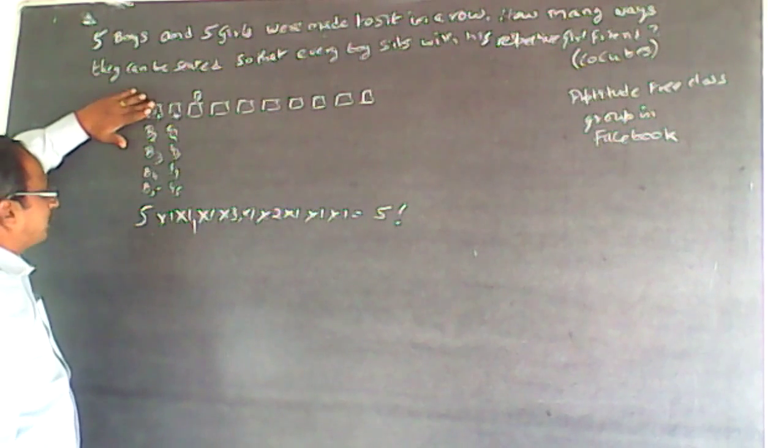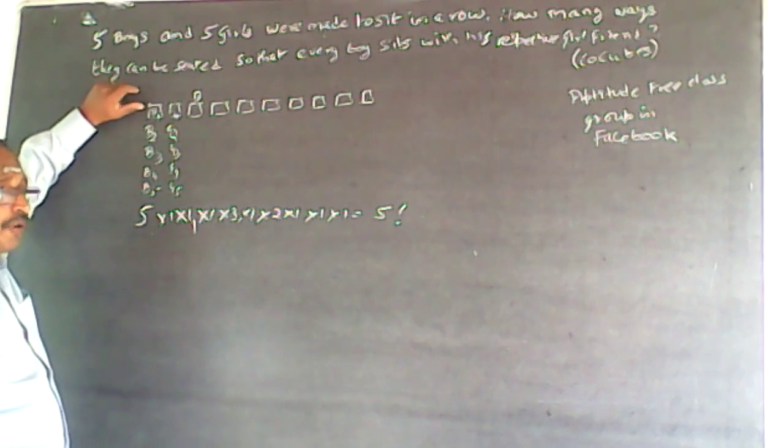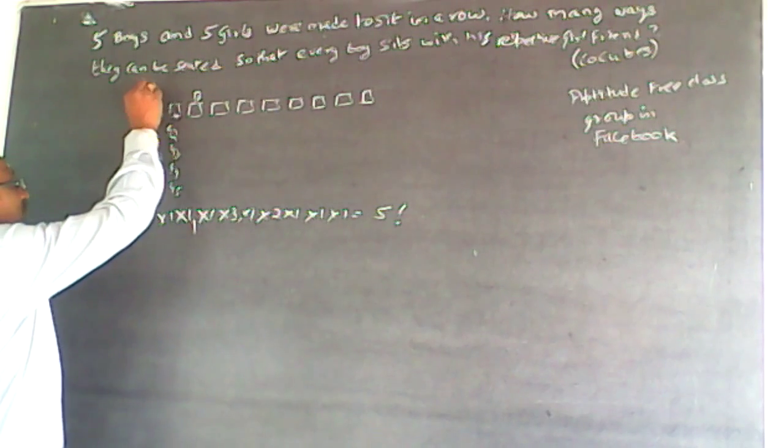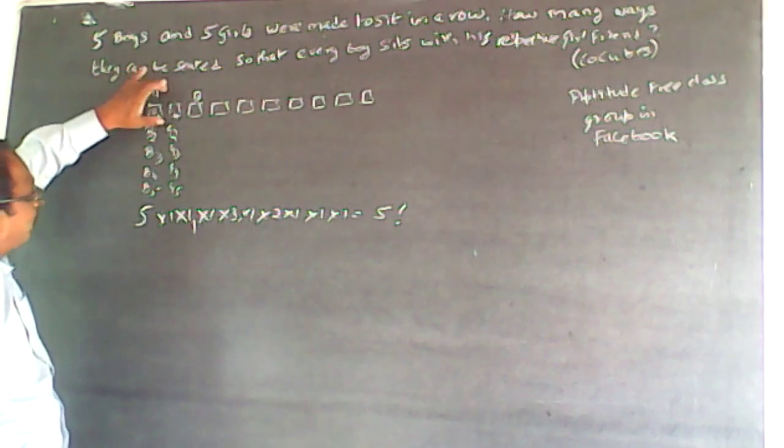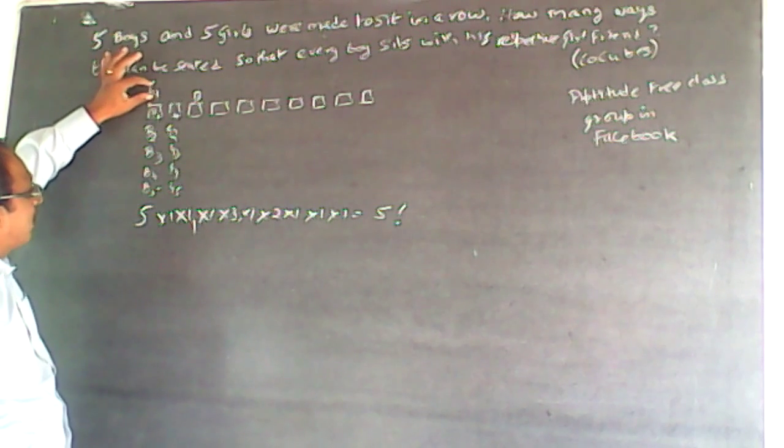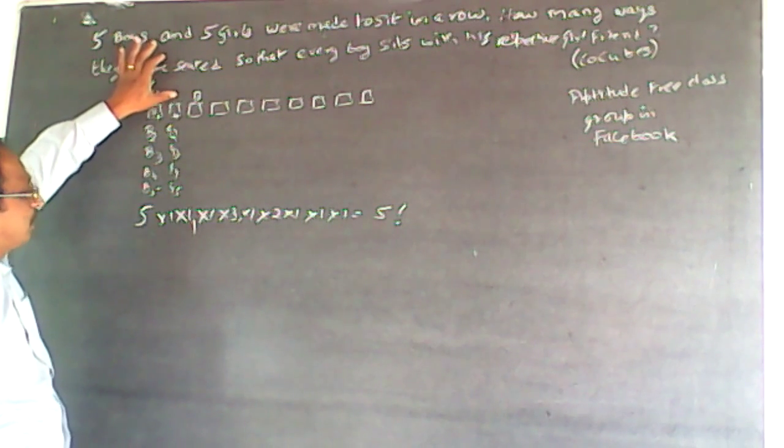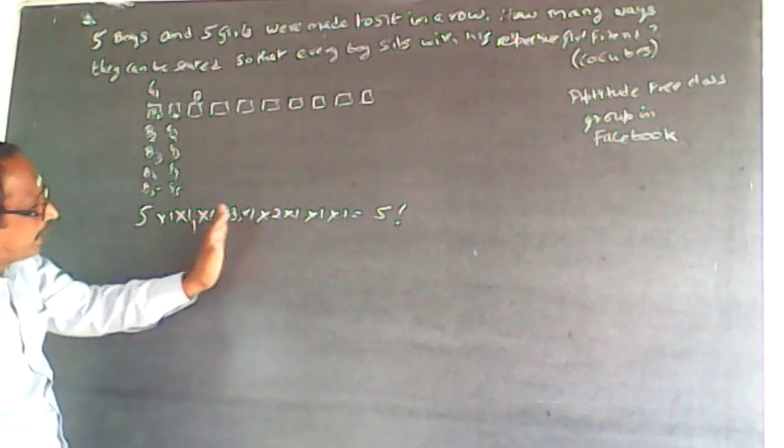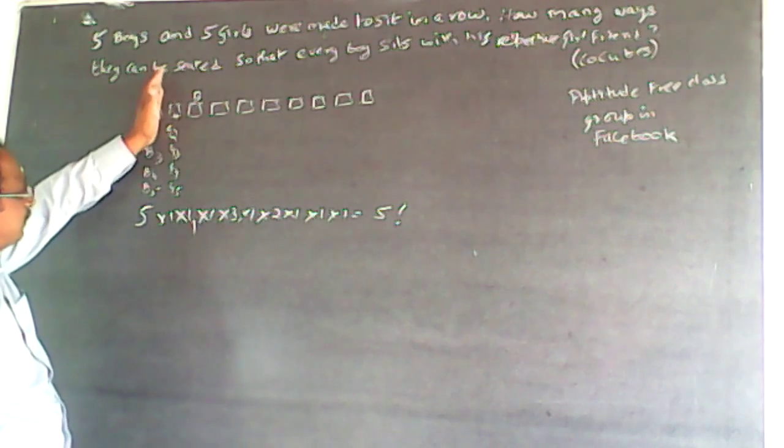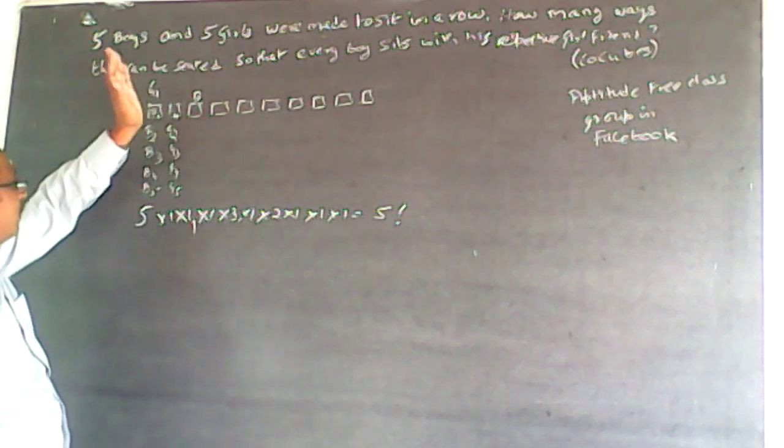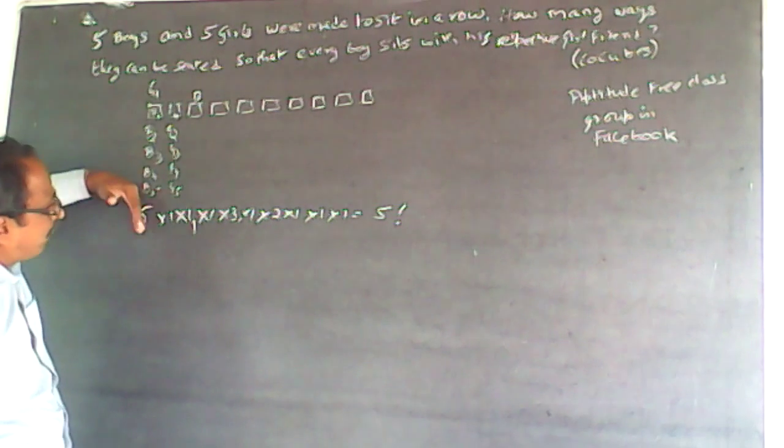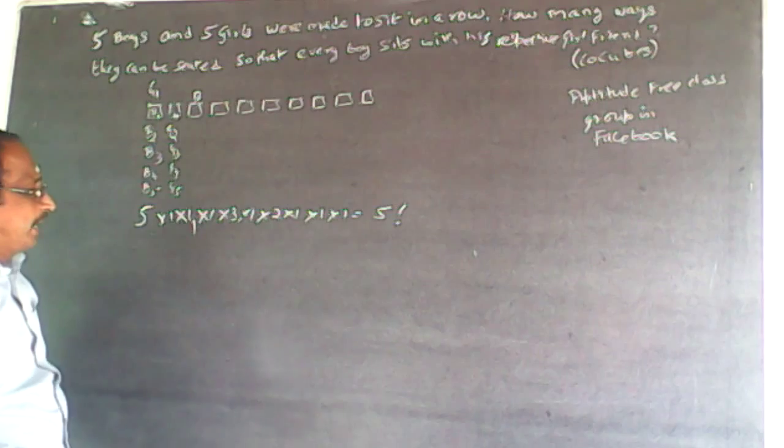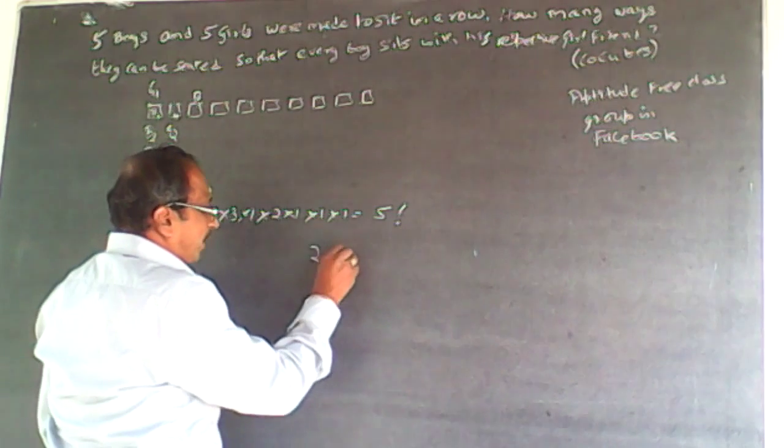Now what I have done is I have taken the first box to be in case of a boy. It can also be G1. Any one girl can sit here, so her respective boyfriend will add up here. Suppose G1's boyfriend is B1, then B1 will add up here. So the same process will get repeated. Now boy is first, girl follows him. Here the opposite: girl is first, boy will follow. So it will be same five factorial applicable.